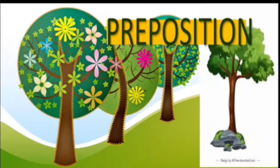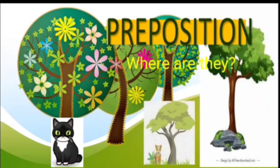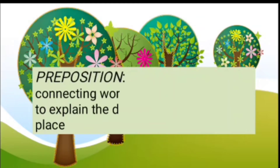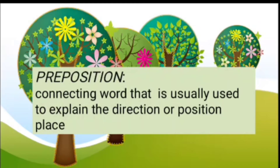Prepositions — we usually ask by using 'where': Where are they? Where is it? Where am I? So what is a preposition? Look at the picture — where is the cat? Where is the lion, the tiger? A preposition is a connecting word that is usually used to explain the direction, position, or place of something.